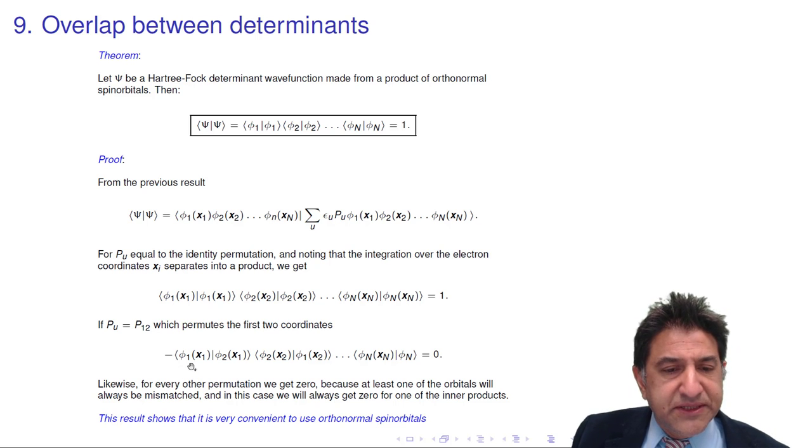But wait. If we integrate phi 1 with phi 2, those two things are orthogonal. So that's equal to 0 and that's equal to 0. So the whole product is equal to 0. That's great. So if we do swap of 1 and 2, we end up with mismatching orbitals on the left and right. And because they're mismatching, they end up being 0.